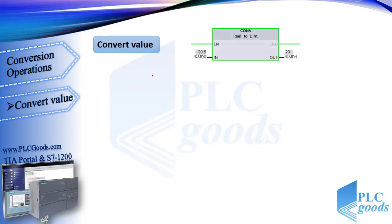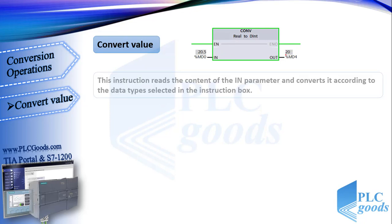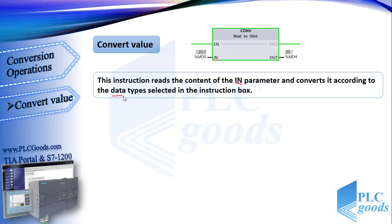The first instruction is Convert Value. Here we determine the data types of the input and output. This instruction reads the content of the IN parameter and converts it according to the data type selected in the instruction box.